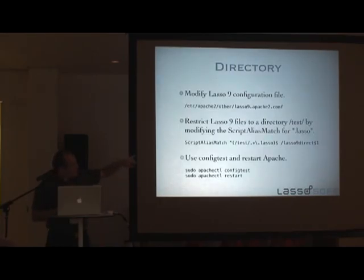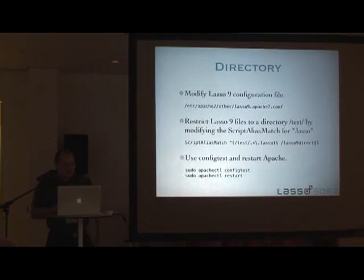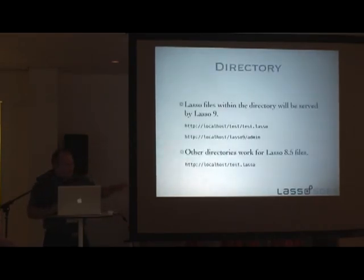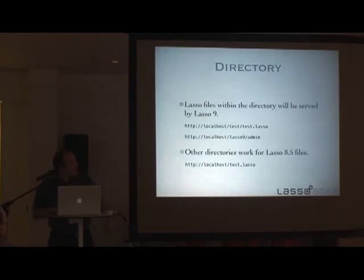In this case, we actually change the ScriptAliasMatch. This is the line that handles .lasso files — it uses a regular expression to find the .lasso file extension. We simply add a directory to the front of it: /test/. So now only .lasso files in the test folder go to Lasso 9. For example, if we load localhost/test/test.lasso, that goes to Lasso 9. But all other files go to Lasso 8.5. And finally, the third method: simply comment out the .lasso ScriptAliasMatch line, so .lasso files go to Lasso 8.5 and .lasso9 files go to Lasso 9.